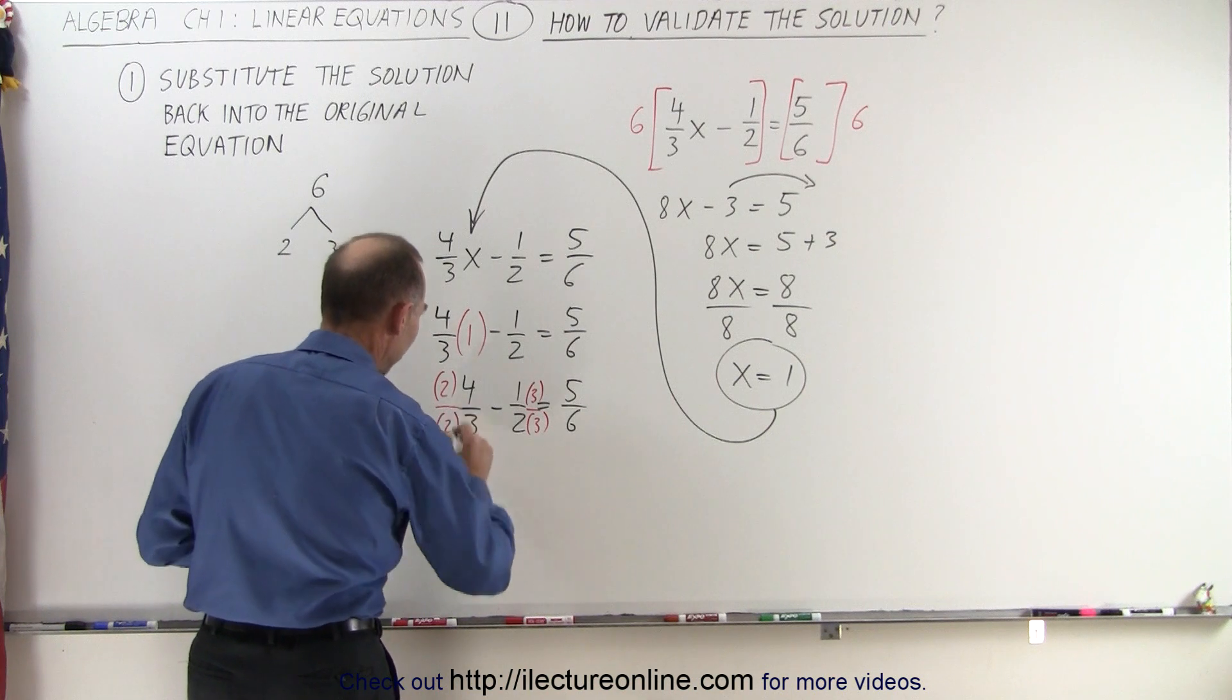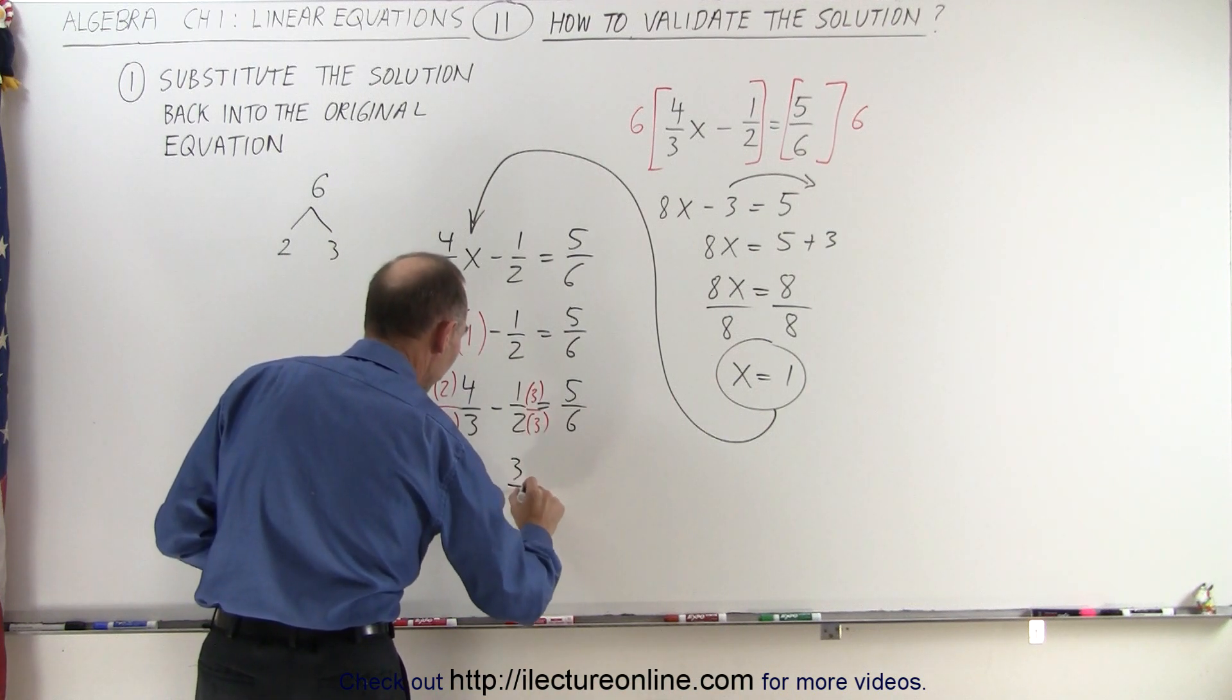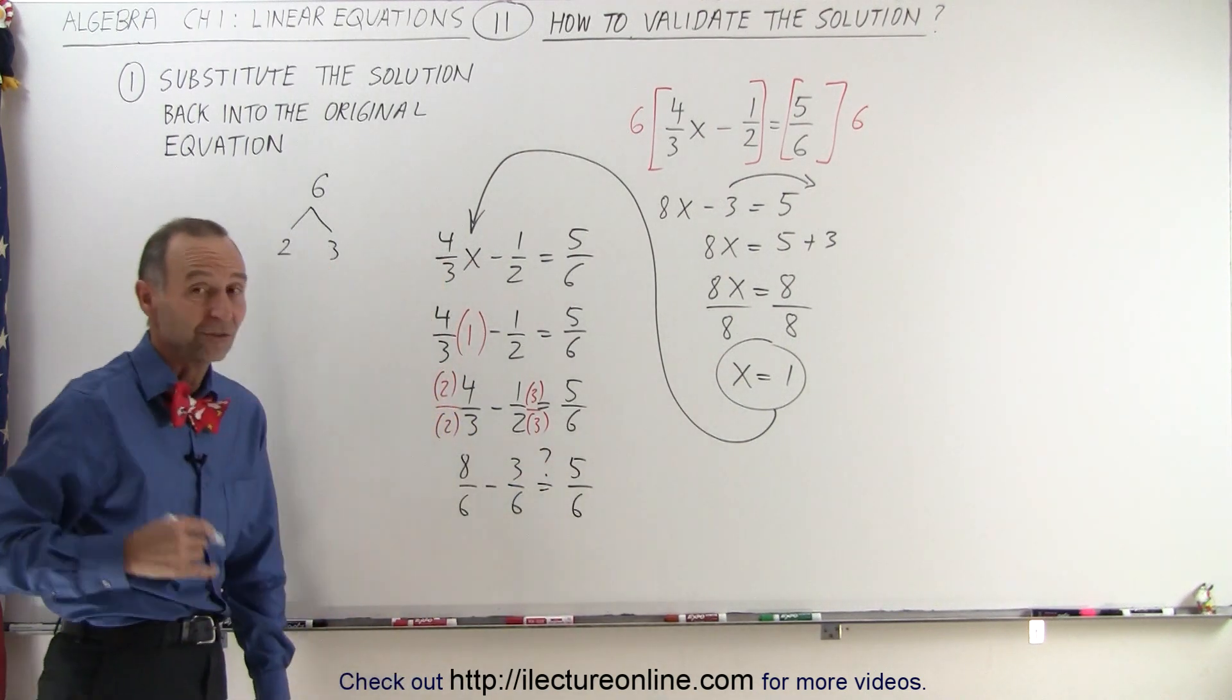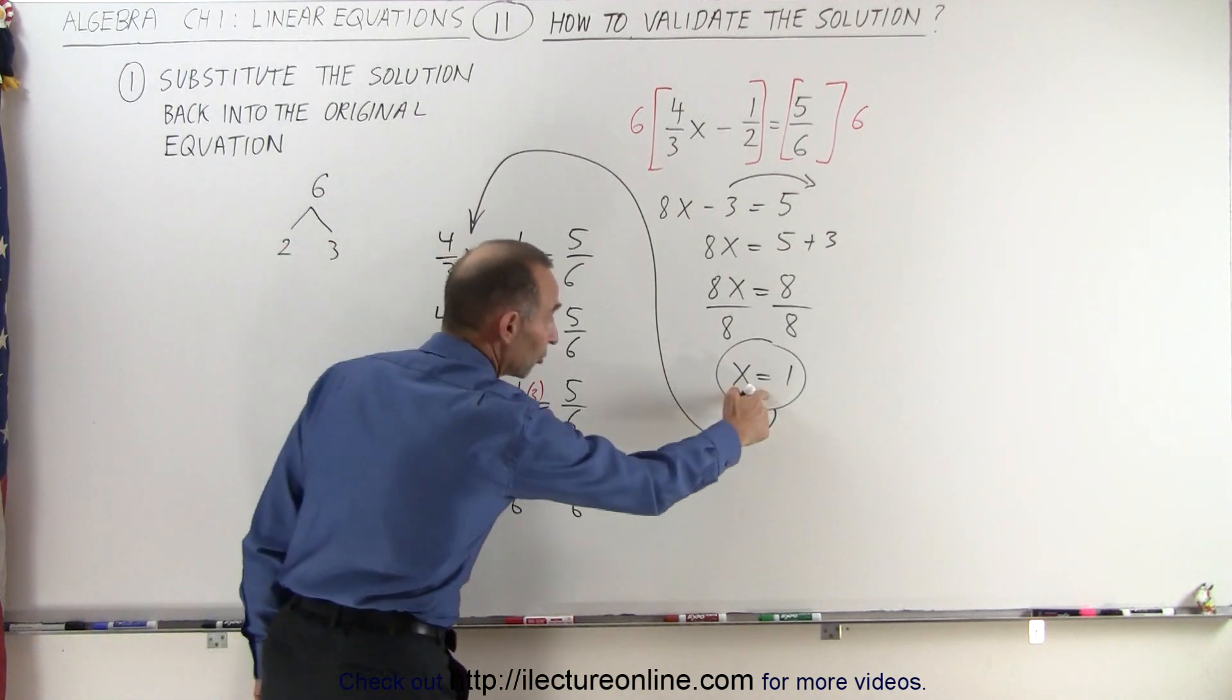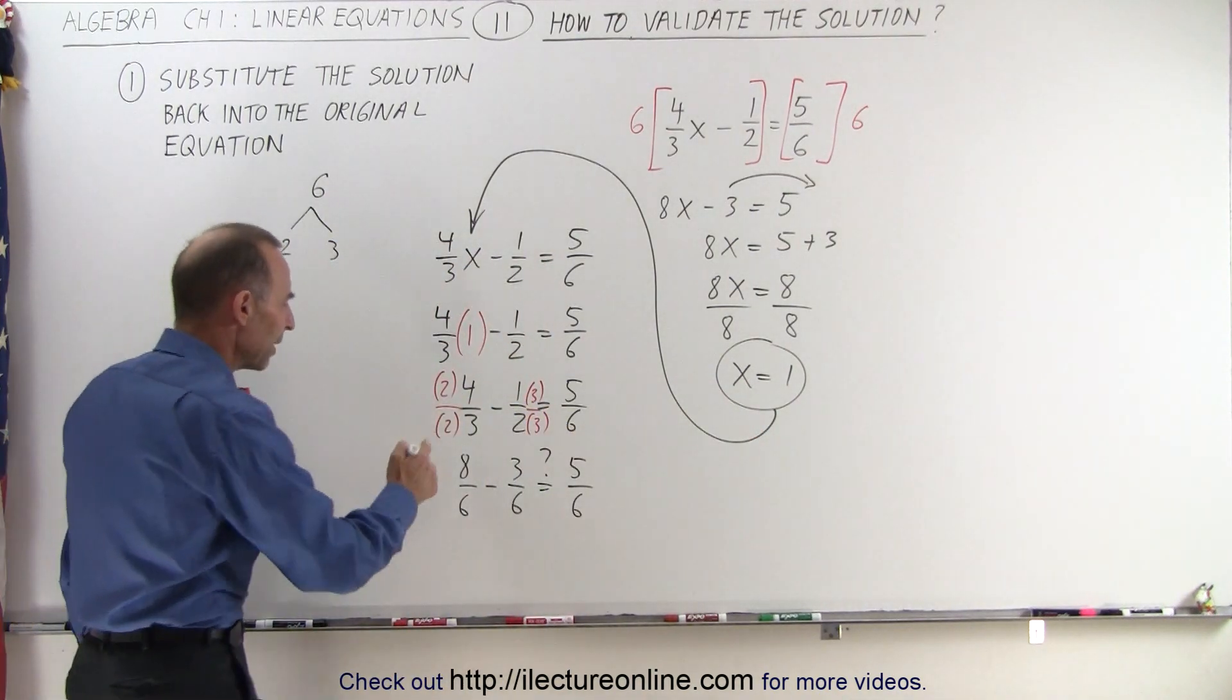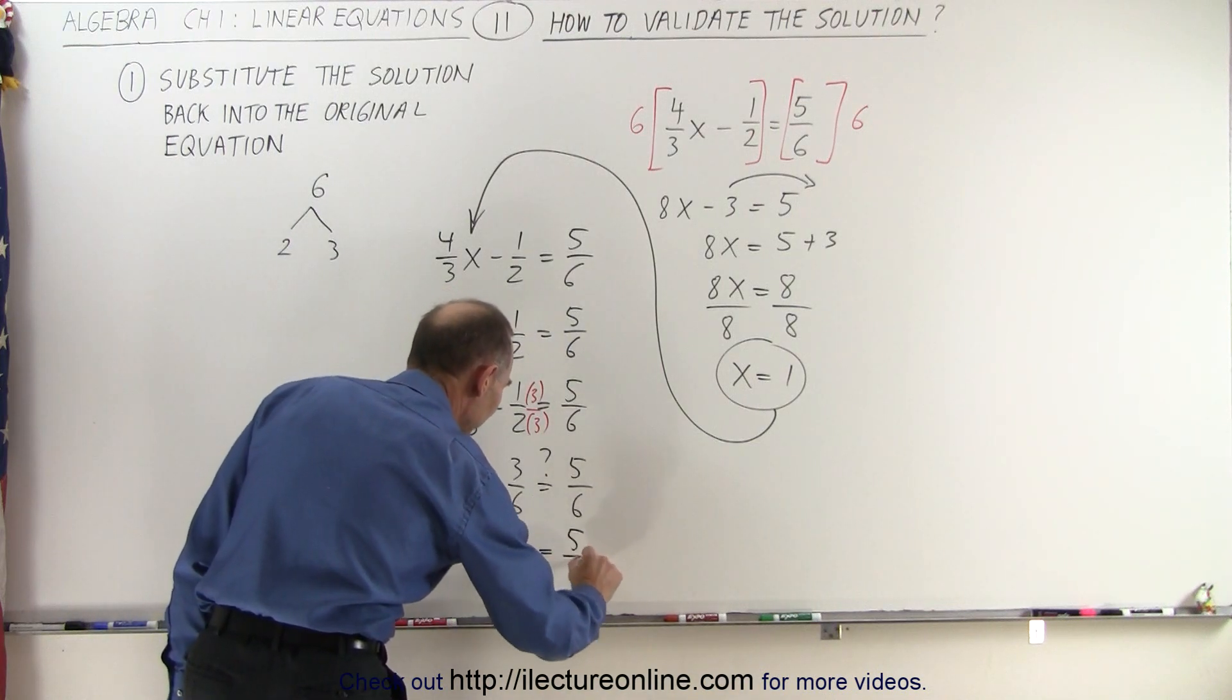So when I do that I get 8 over 6 minus 3 over 6, is that equal to 5 over 6? If the answer is yes, then I found the correct solution. If the answer is no, then I made a mistake somewhere. So 8 minus 3, that would be 5 over 6, and of course that is equal to 5 over 6.